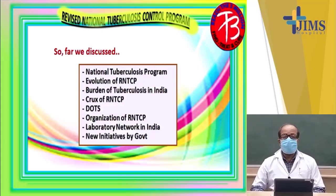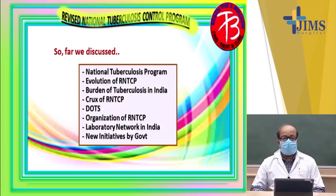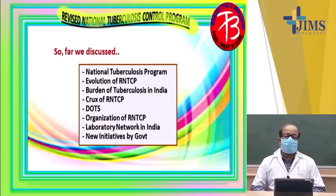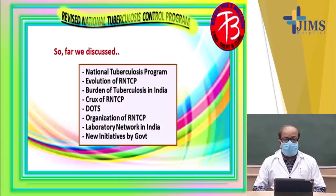We have discussed about the burden of tuberculosis in India. The burden is approximately 20 lakhs of new cases, or 19,60,000 new cases every year, with 80,000 smear positive cases. We spoke about the crux of RNTCP. RNTCP has got three main elements: sputum microscopy was given much more emphasis than chest x-ray. Earlier chest x-ray was given maximum importance, whereas in RNTCP, sputum microscopy has been given maximum importance.